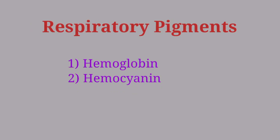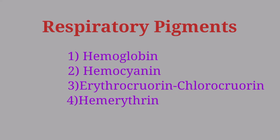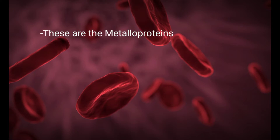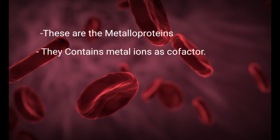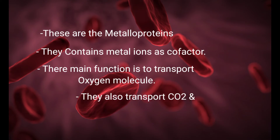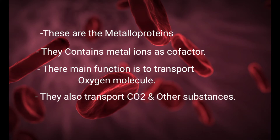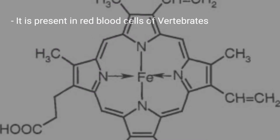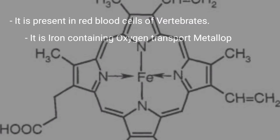There are four types of respiratory pigments: hemoglobin, hemocyanin, erythrochlorine, chlorochlorine, and hemerythrin. These respiratory pigments are metalloproteins — they contain metal ions as cofactors. Their main function is to transport oxygen molecules, and they also transport carbon dioxide and other substances to each and every cell of the particular animal.